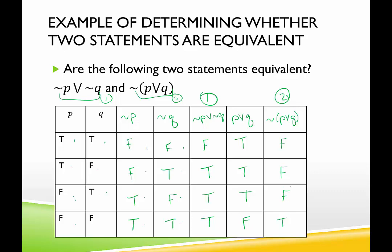Now we're comparing statement 1 with statement 2. In order for these to be equivalent, they have to have the same truth value at every single row. Here we see false and false — perfect. Here we see true and false — oh no. They're not equivalent. We would say not P or not Q is not equivalent to not (P or Q).